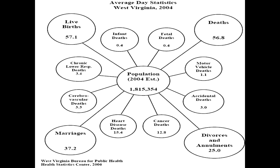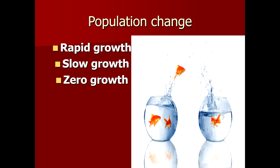In addition to these vital events, in-migration and out-migration also affect the population of a specific area. There are three main trends of population change. Number one is rapid growth — if the birth rate is high and death rate is low, the population grows at a very rapid rate, and if the population in the reproductive age group is much larger, giving birth to newborn babies, the population grows rapidly.